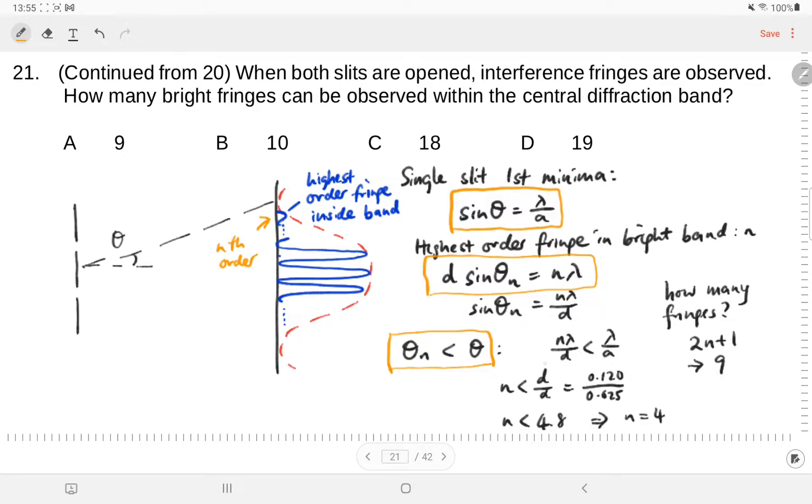Lambda will cancel out. We note that n will simply be a ratio of d upon a. So d is the slit separation, a is the slit width. Using the numbers given in the question, we end up with n less than 4.8. This means that the highest order n that can be observed will be fourth order.